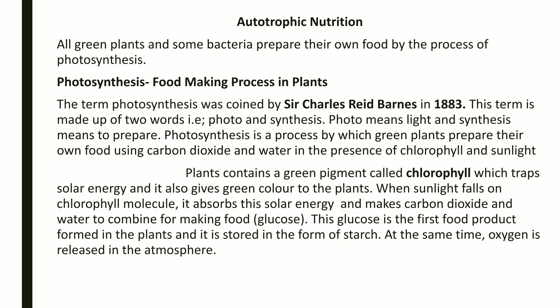The raw materials for photosynthesis are carbon dioxide and water. Leaves take carbon dioxide from the atmosphere, which enters through stomata. Water and minerals are absorbed by root hairs from the soil. Carbon dioxide and water combine in the presence of sunlight with the help of chlorophyll, and food is formed as glucose, which is stored as starch in different parts of plants. During photosynthesis, oxygen gas is also released into the atmosphere.